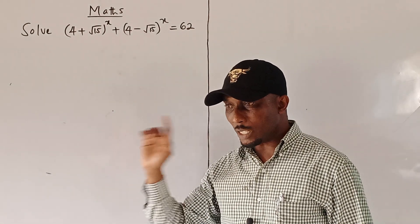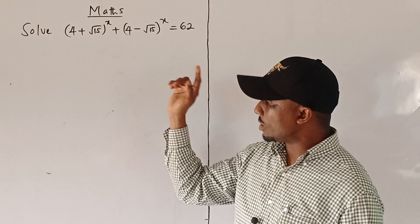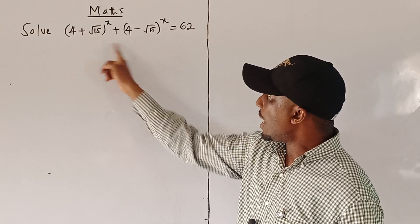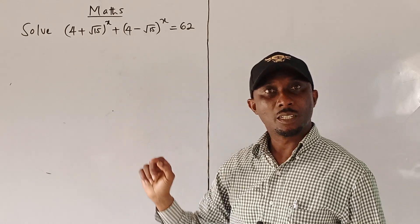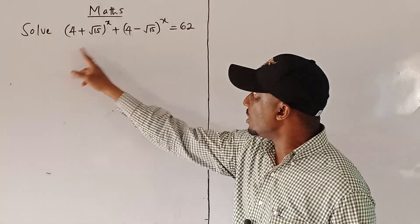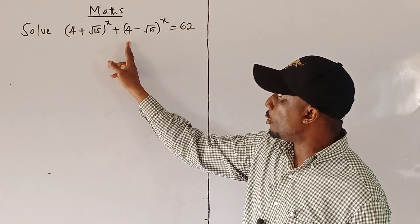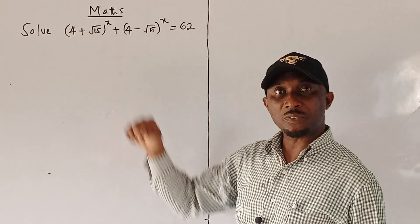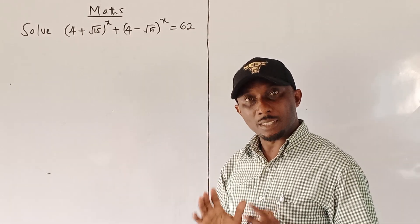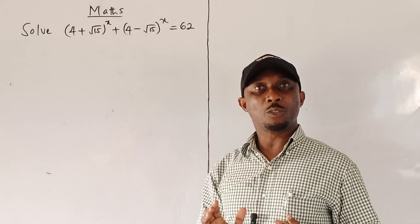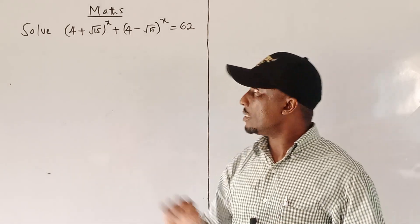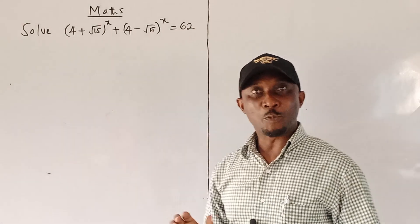On the other hand, if you take a second look, you will see that these radicals are actually the conjugate of each other. So 4 + √15 is the conjugate of 4 − √15, and vice versa. With that symmetry, we are going to resort to rationalizing either of these two radicals.